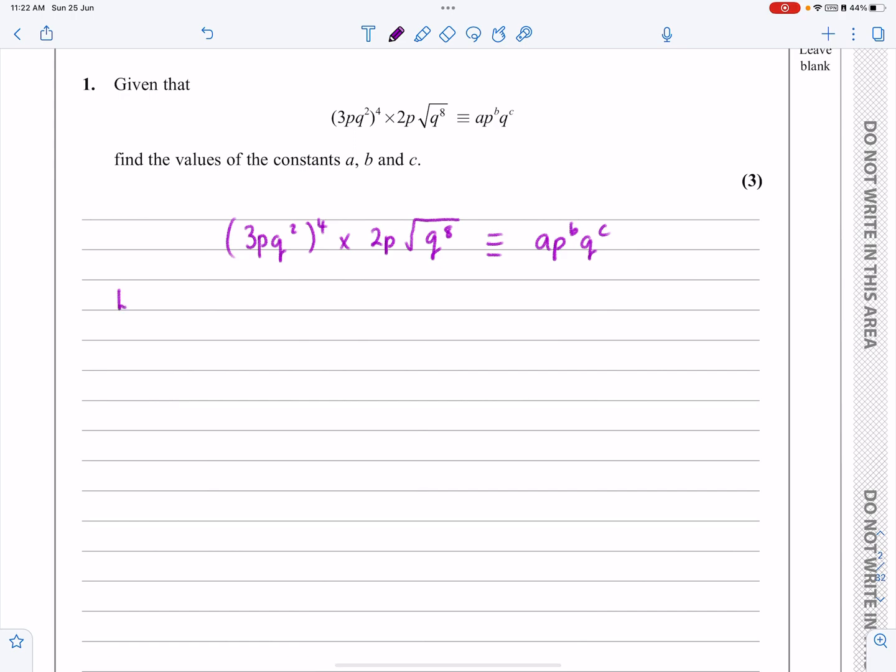So from the left-hand side then, if I've got (3pq²)⁴, that's going to be 3⁴, you don't really need as much detail as this, it's only worth 3 marks, but I'll go through it slowly: p⁴, q⁸, multiplied by 2p, and q⁸ to the half.